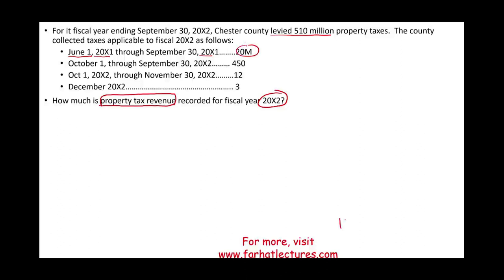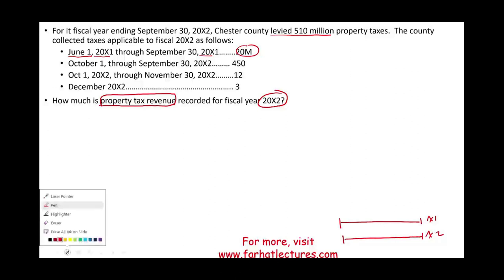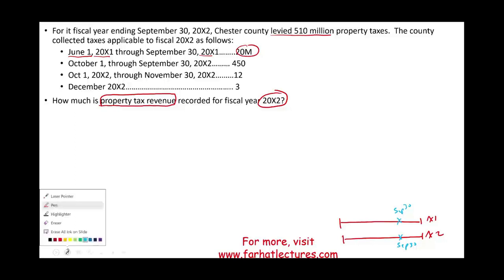Here's what you need to know: this is year X1 and this is year X2. The year ends September 30th, so we are looking from September 30th X1 till September 30th X2 — that is the area we are looking at to figure out how much revenue was collected.